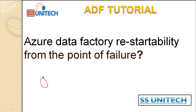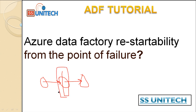For example, if we have three activities — activity one, activity two, and activity three — and we want to execute all these activities in sequential order, and activity two fails, we don't want to execute activity one again since it already executed successfully. We just want to execute our pipeline at the point of failure, which is activity two.